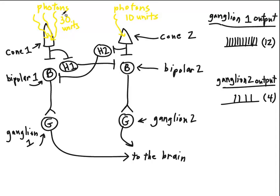So if cone 1 has 30 units of hyperpolarization, that would mean both bipolar cell number 1 and horizontal cell number 1 are more strongly disinhibited than bipolar cell 2 or horizontal cell 2 where there are only 10 units of inhibition.